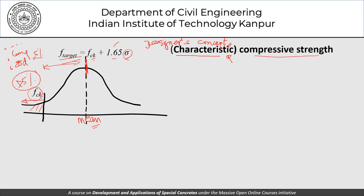If we want not more than 2% to fall below the characteristic strength, then 1.65 will change accordingly. If we are happy with 10% falling below, that number changes too. The normal definition is 5% below this value, and therefore the mix is designed for a target strength of FCK + 1.65 × sigma.